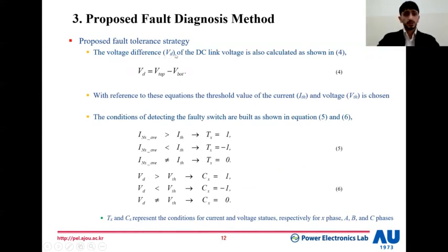The voltage difference, V_D, represents the voltage difference between the voltage of the upper and lower capacitors of the DC-link voltage, as shown in equation number four. And then we set threshold values for the current and voltage to be compared with. The main conditions are represented in equation number five and six, as shown here. The conditions for the current are labeled by T and C for the voltage. X, again, represents the phase A, B, or C.